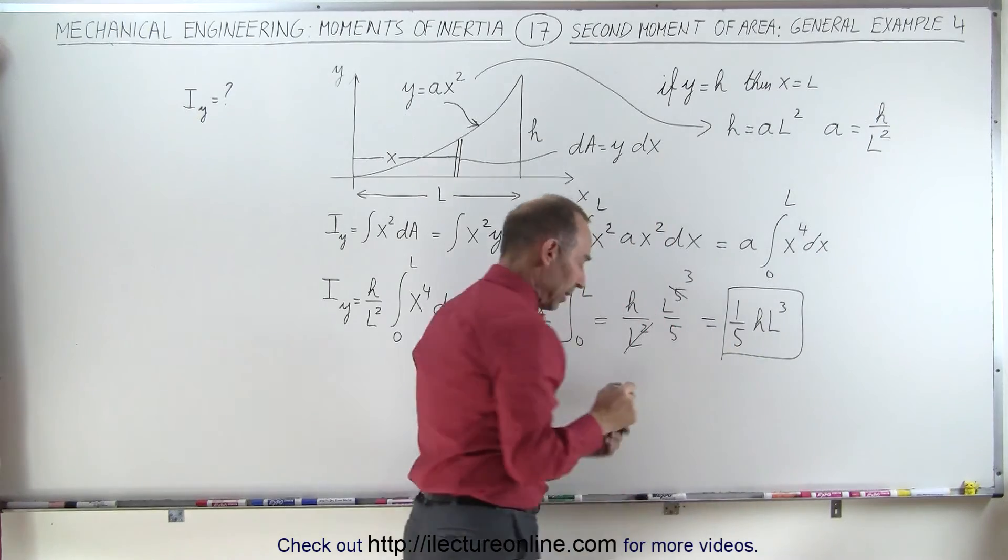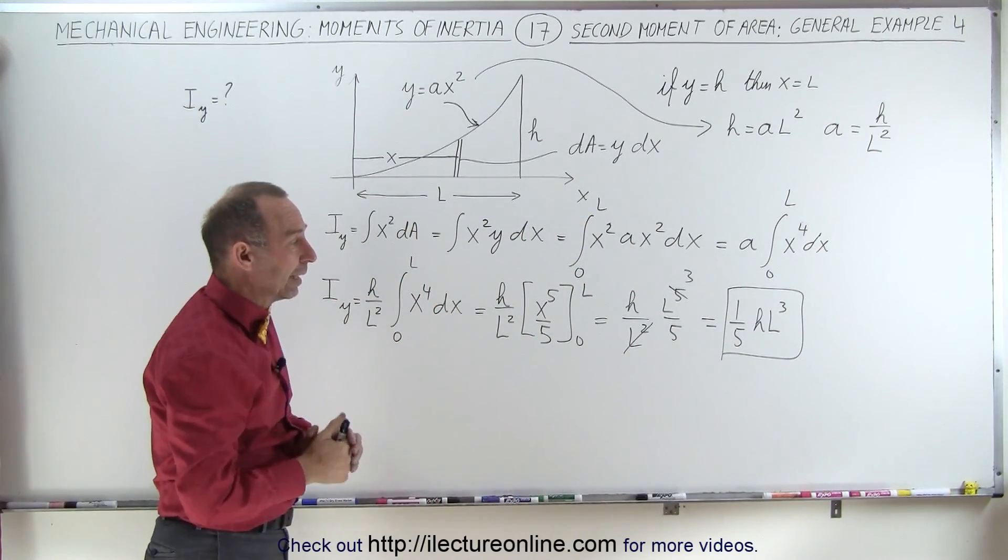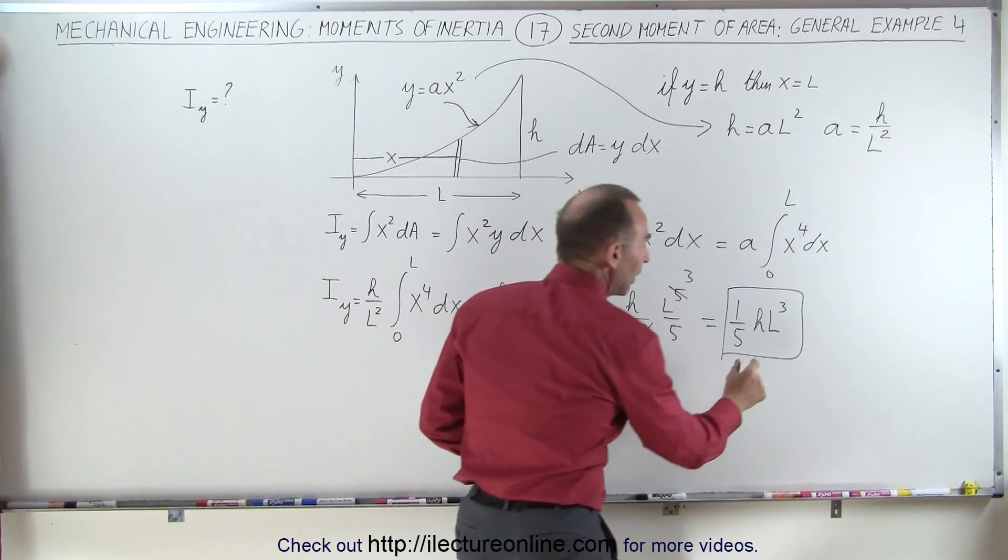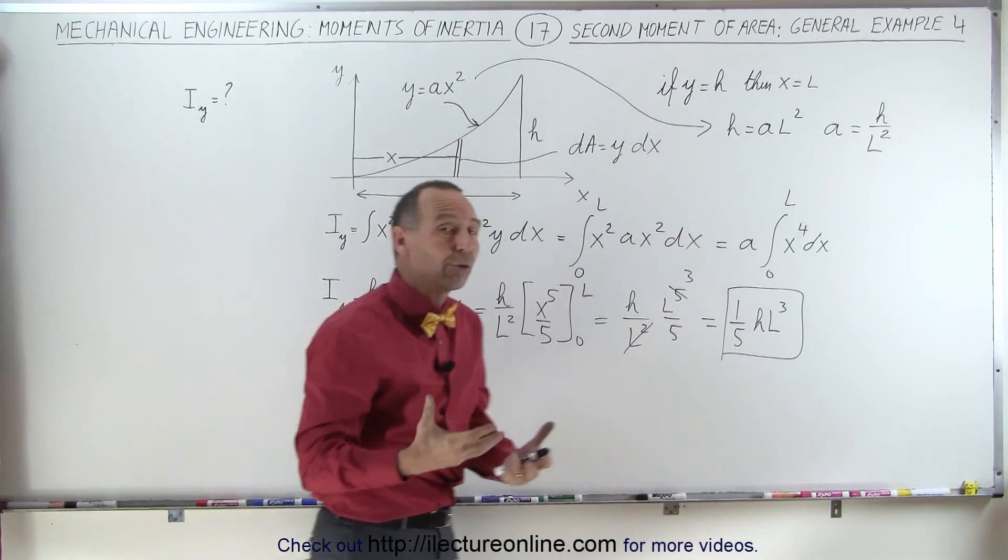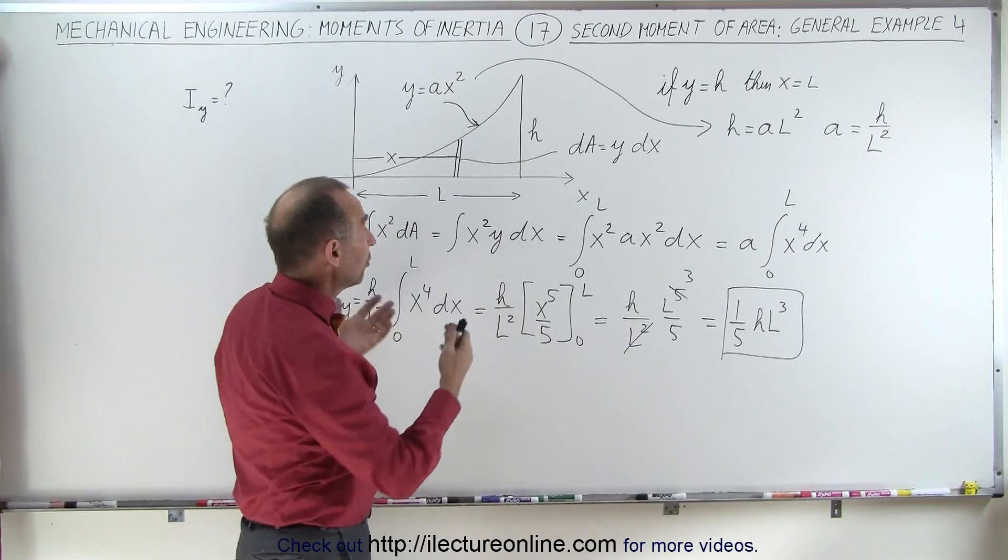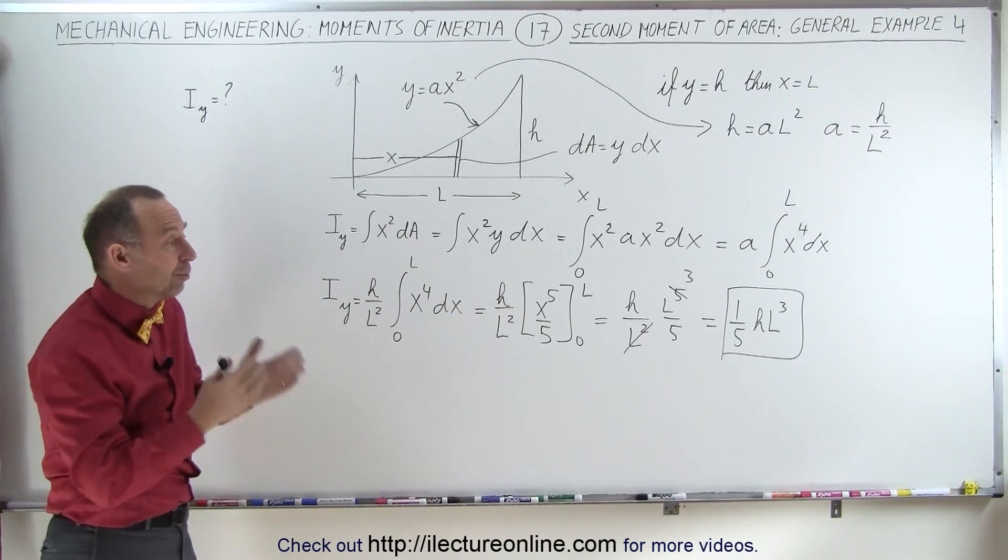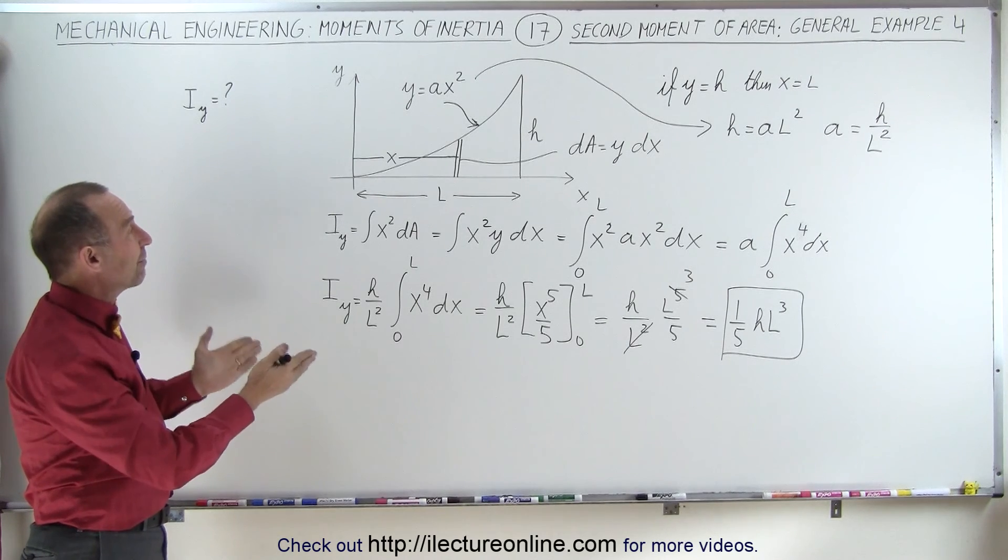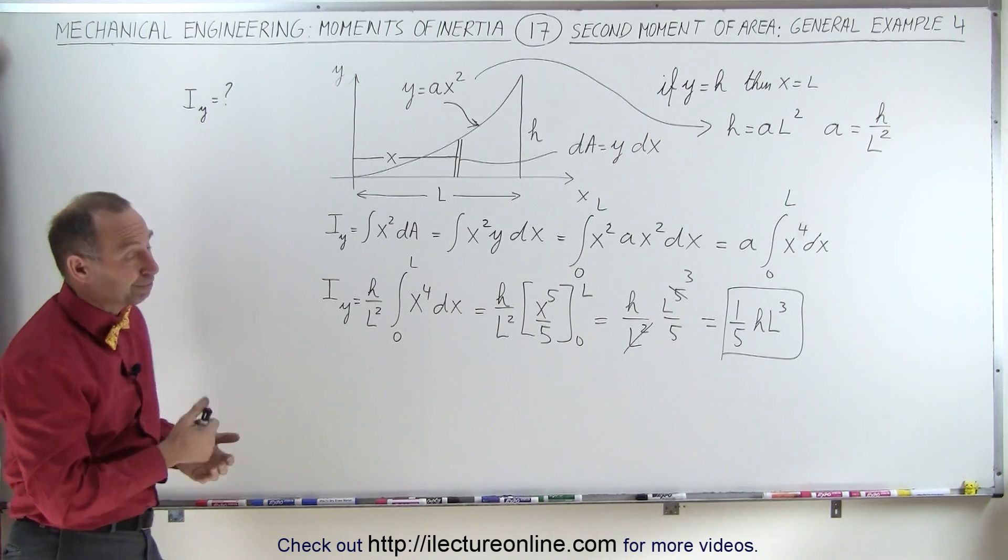Now the reason why I say that this is probably correct unless I made some error somewhere is that at least unit wise we have length to the fourth power. H to the first power, length to the third power combined. That gives us length to the fourth power which means we would have units of meters to the fourth power which is the units of the second moment of area. So it looks like that that's probably correct. And that's how we find the second moment of area of a parabolic shape like that. That's how it's done.